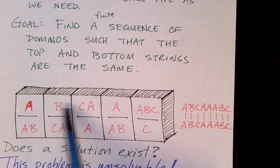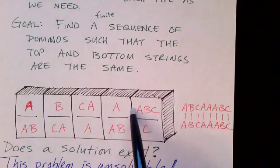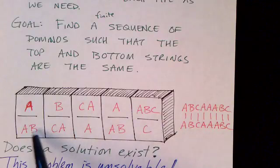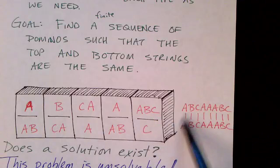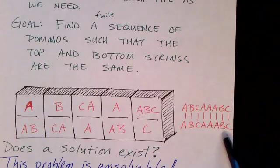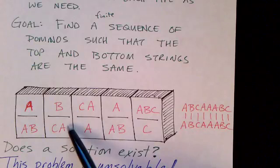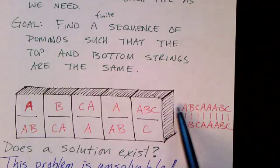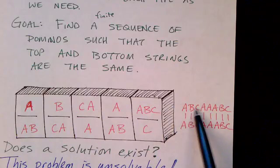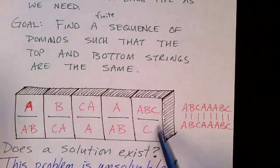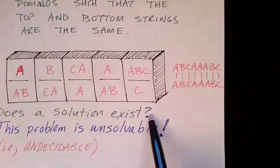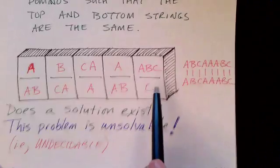So is this a solution? The top reads off A, B, C, A, A, A, B, C. The bottom reads off A, B, C, A, A, A, B, C. So writing them over here again you can see that the top string and the bottom strings are equal: ABCAAABC. So this is a solution and the problem is does the solution exist?